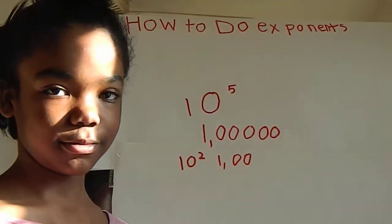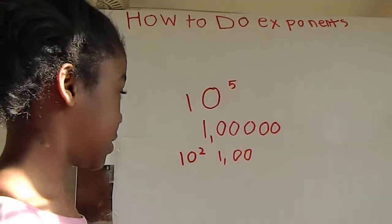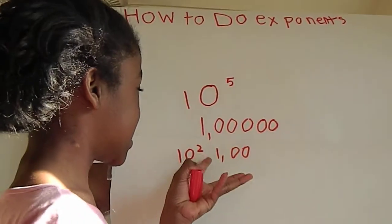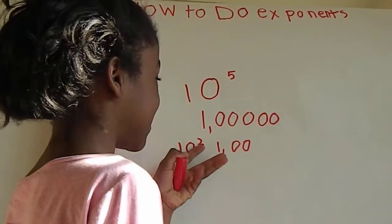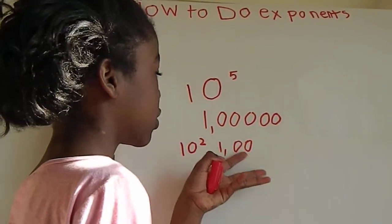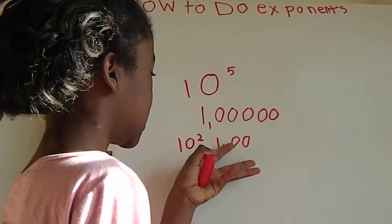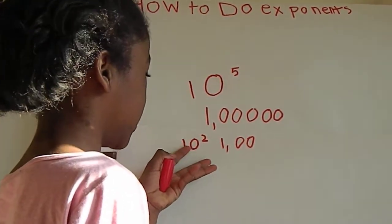Why? Because this right here represents how many zeros you need for the 1.